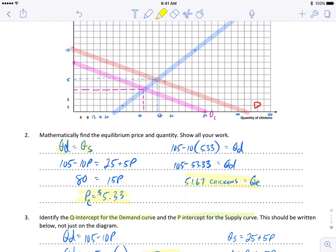In this case I put it into the quantity demanded but it would give you the same number either way, and when you work through that math using the quantity demanded equation you come up with 51.67 chickens as your quantity equilibrium in this scenario.